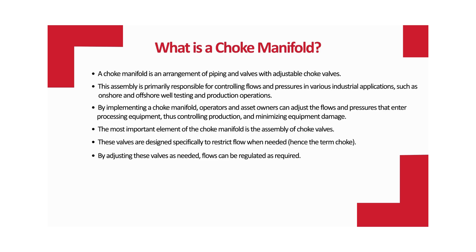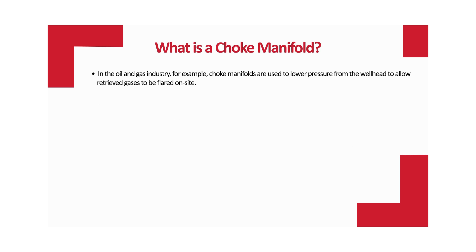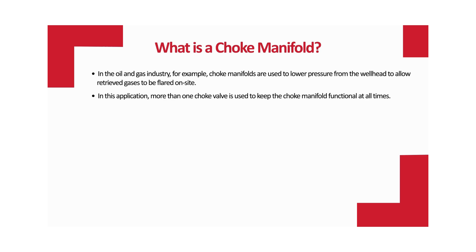By adjusting these valves, flows can be regulated as required. Common ancillary equipment on a typical choke manifold includes choke boxes, pressure sensors, pressure sampling ports, and thermal wells to monitor pressure, temperature, and other fluid properties. In the oil and gas industry, choke manifolds are used to lower pressure from the wellhead to allow retrieved gases to be flared on site, using more than one choke valve to keep the manifold functional at all times.